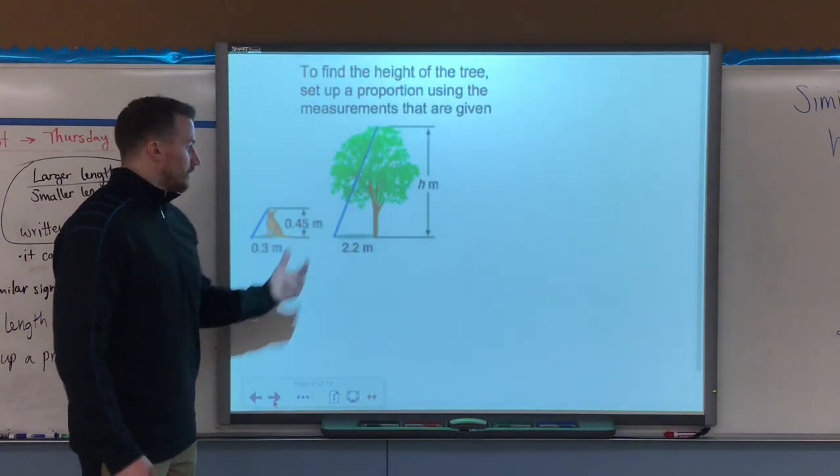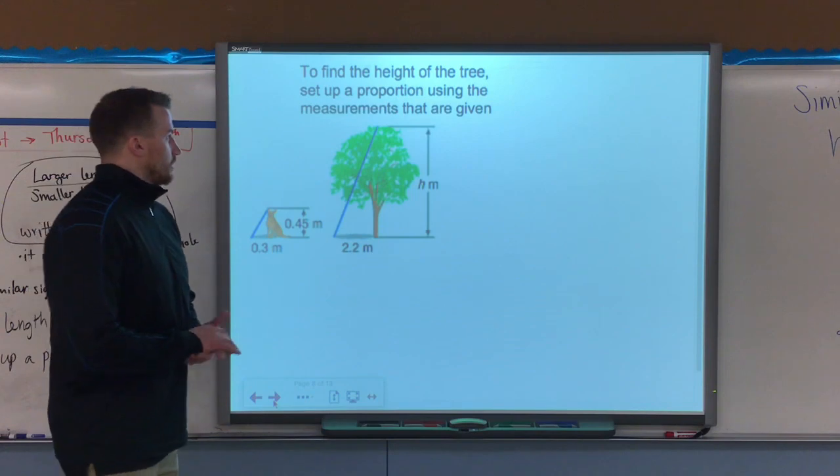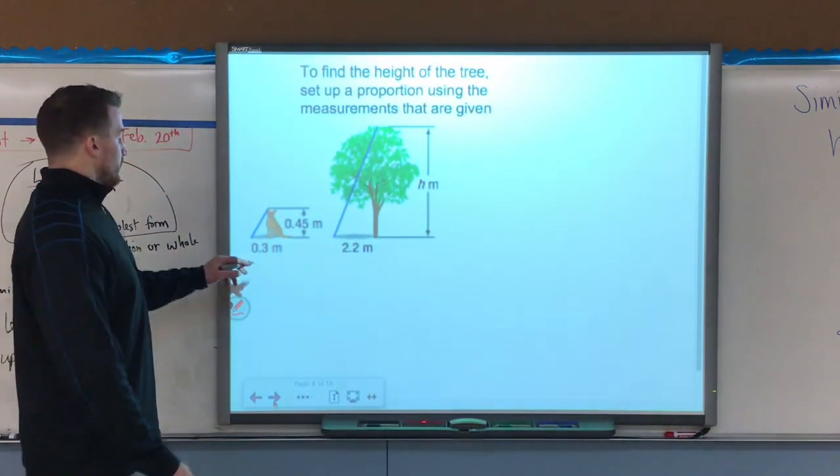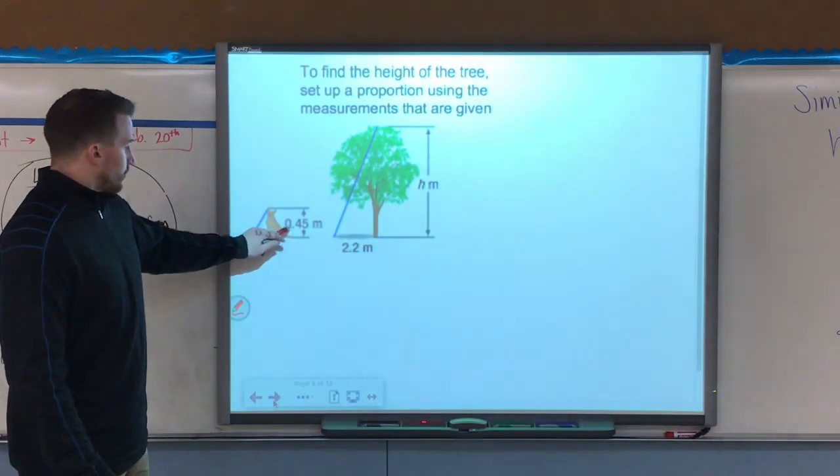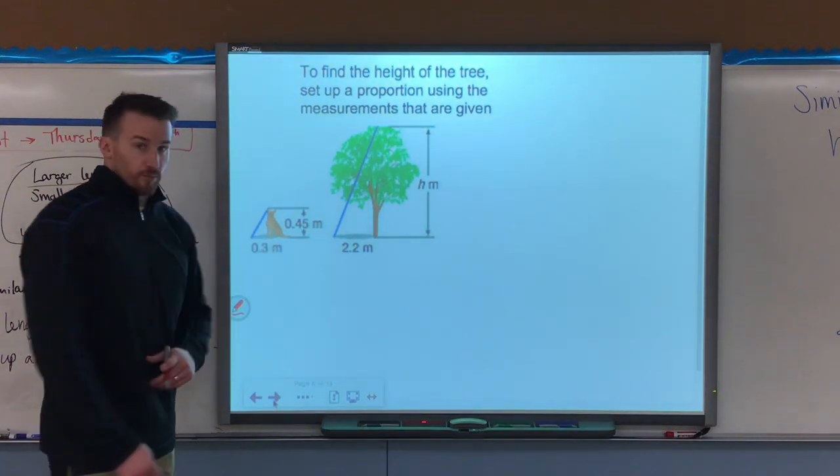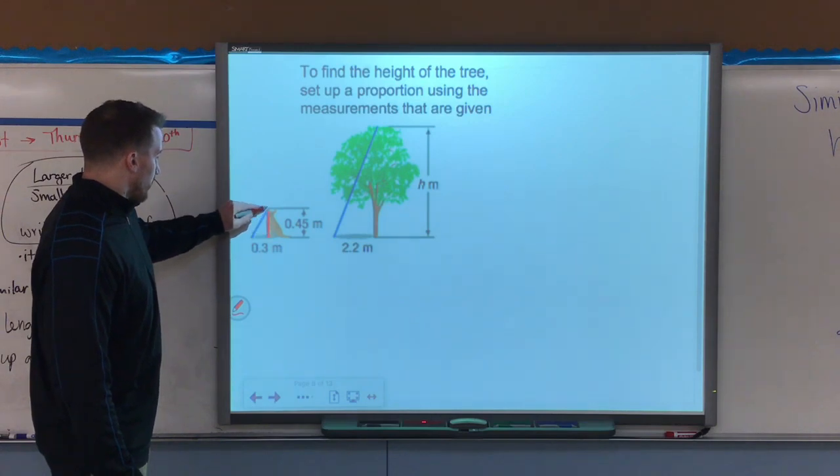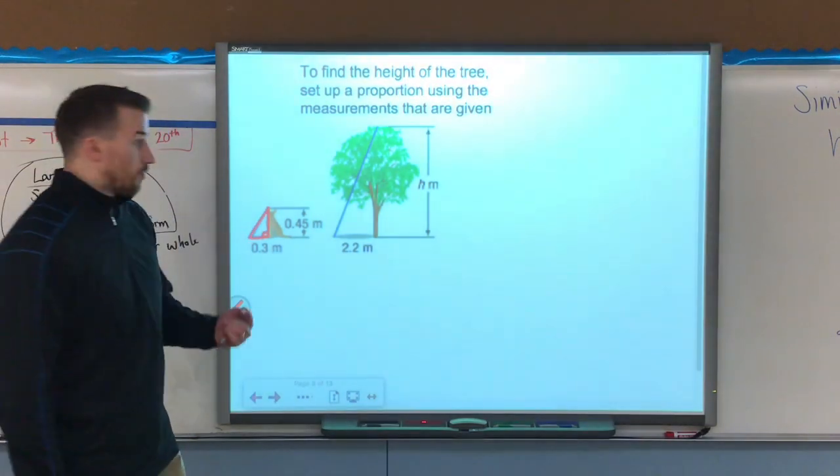So here we go, first example. It says to find the height of the tree, set the proportion using the measurements that are given. What I need to do is I need to see that this dog here is 0.45 meters tall. His shadow is 0.3 meters long. So essentially, they make a right triangle. So there's my one figure.